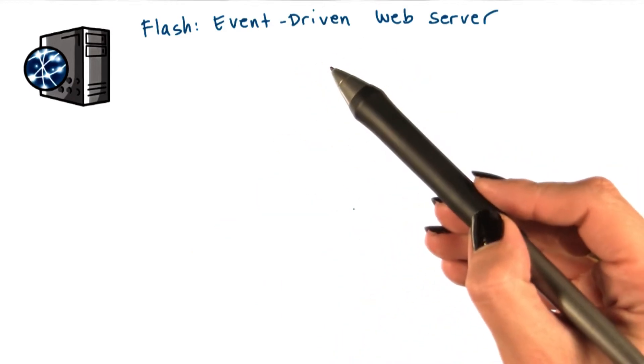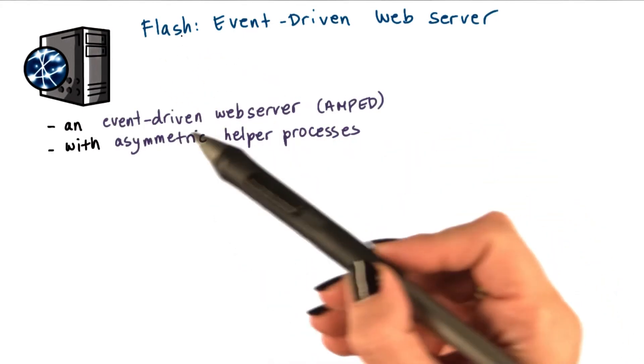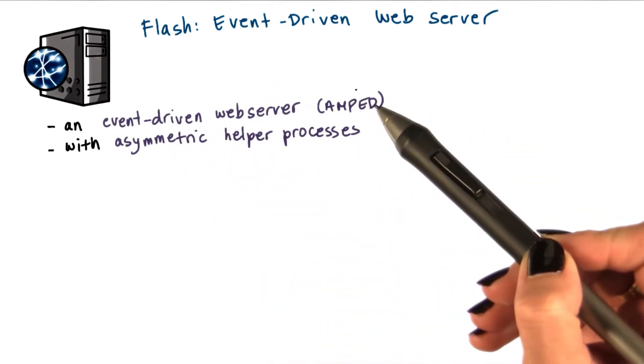With all this background on the event-driven model, we will now talk about the Flash paper. Flash is an event-driven web server that follows the AMPET model.